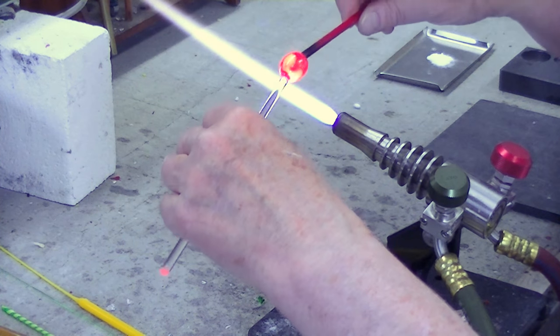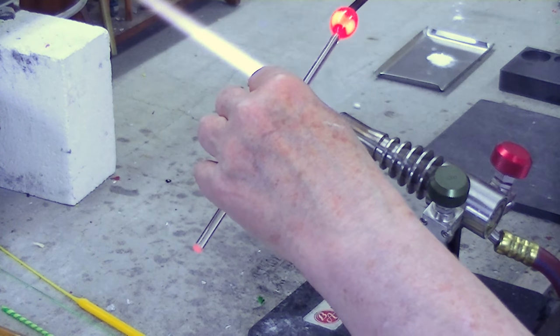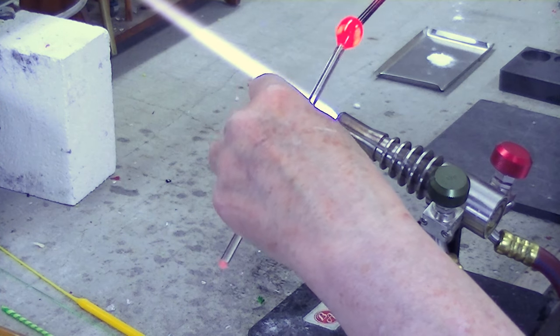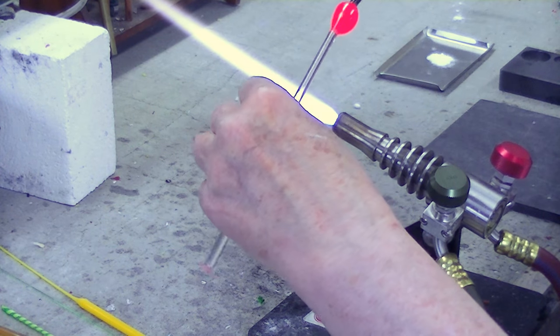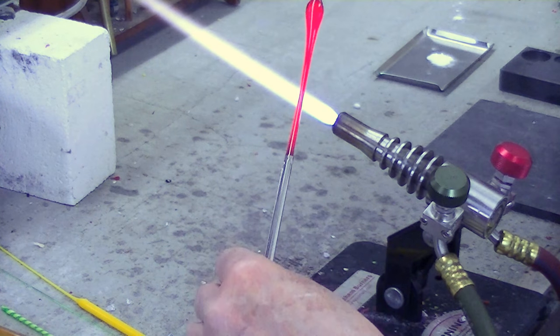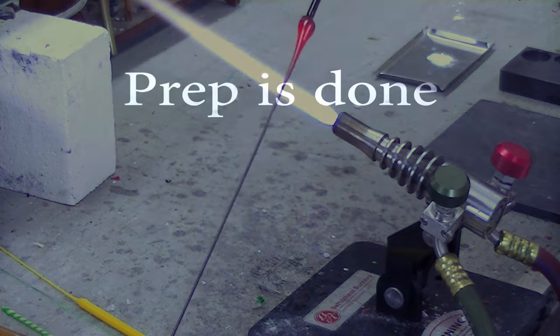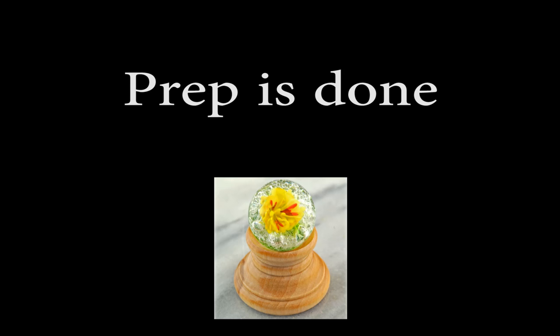To test the heat, I'm going to push both rods towards the center, and if the glass moves sort of like a bellows on an accordion, then I know it's time to pull. All right, our prep is done.